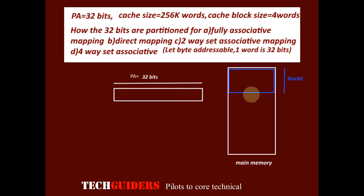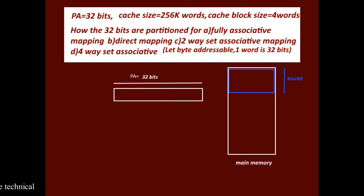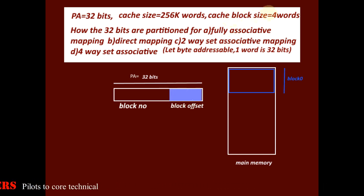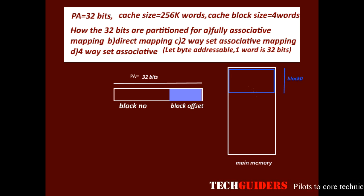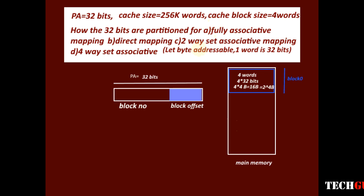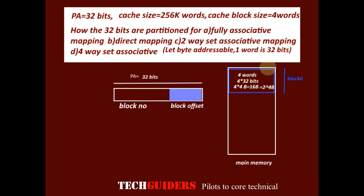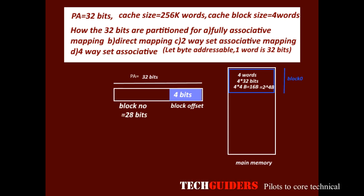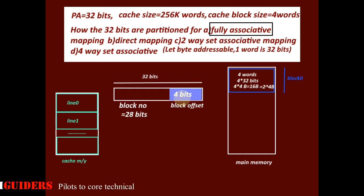The physical address of 32 bits can be split into two parts: the block number and the block offset. The cache block size is 4 words, and each word is 32 bits, hence 4 × 32 bits = 128 bits = 16 bytes = 2^4 bytes. Since it is byte addressable, 4 bits are required to address each byte within the block. Hence the block offset is 4 bits and the block number is 32 − 4 = 28 bits.